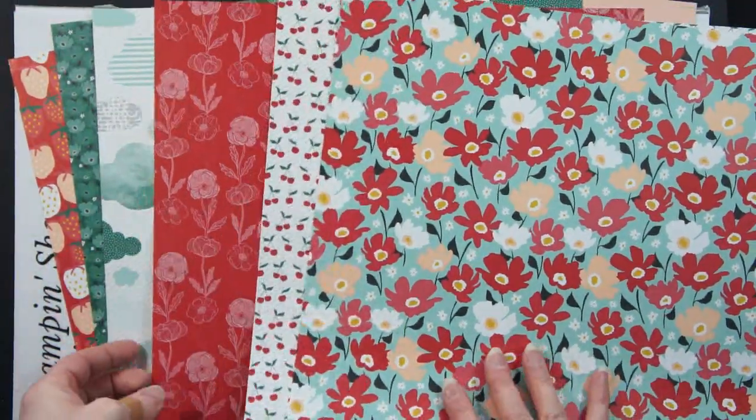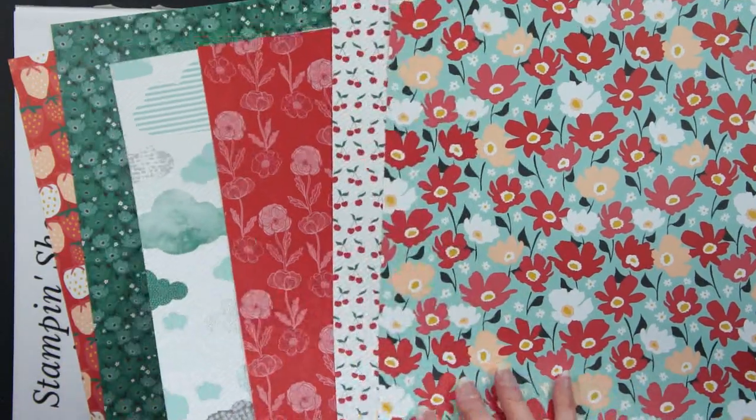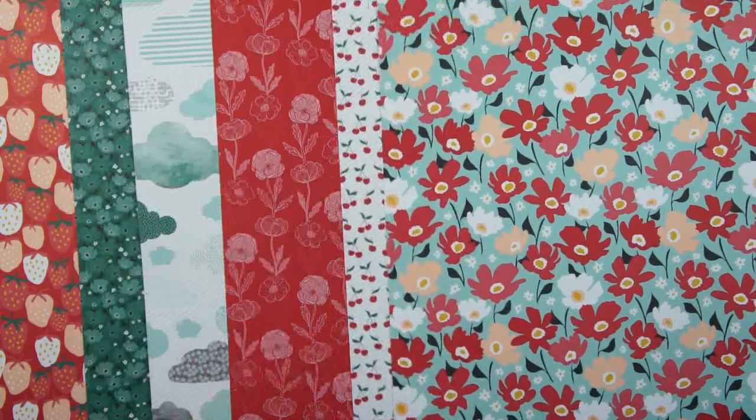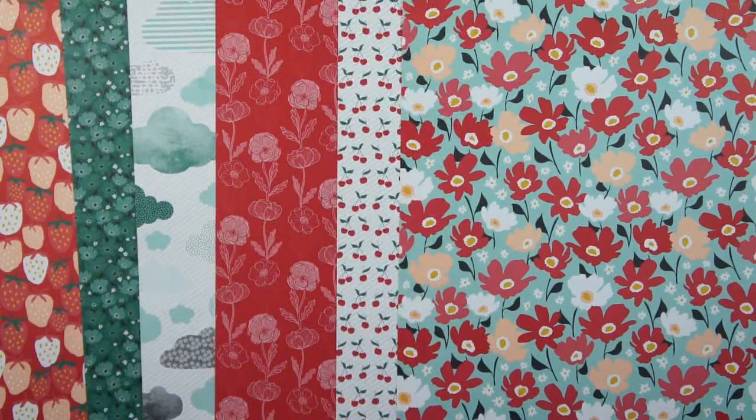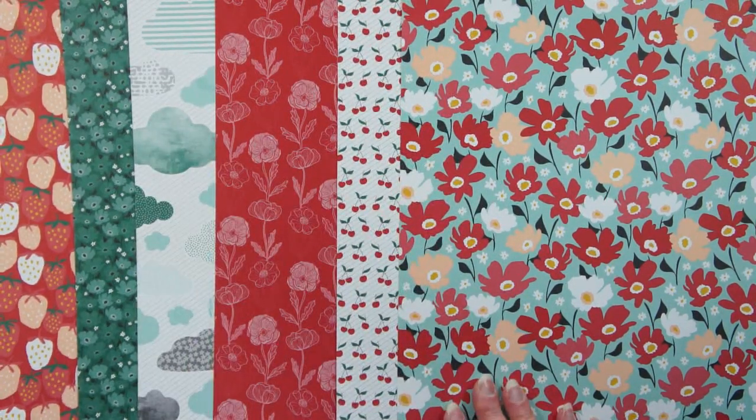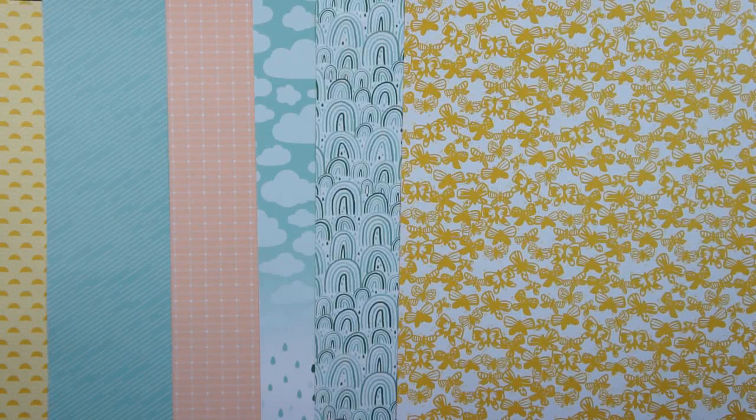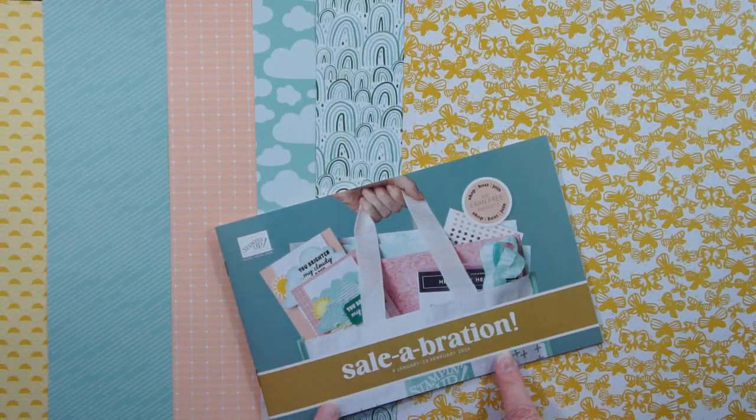So these are called Sunny Days Papers and there are twelve different prints double-sided so there's two prints per page so you have lots to choose from and so these are the nice bright vivid prints that come with Sunny Days Paper and you can pick up this paper packet as an add-on for free when you place a $50 order during our celebration promotion.